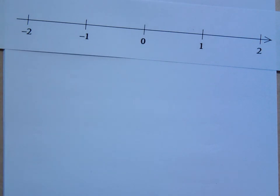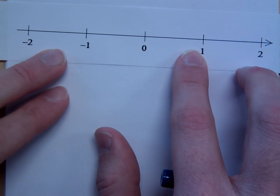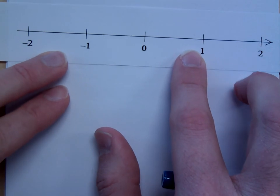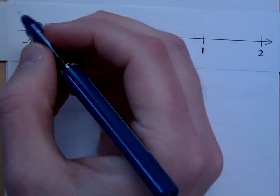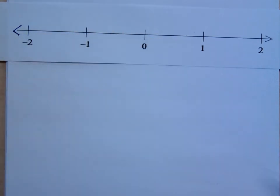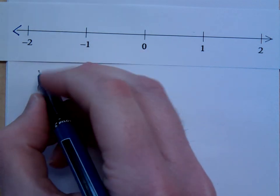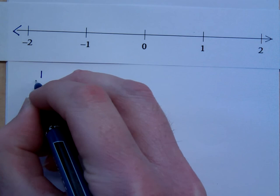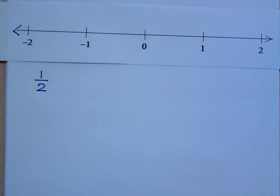I want us to get an idea about where numbers are on the number line. I apologize for the low-techiness of this, but here's a good number line for you. Let's make sure it does have an arrow on both ends. So, if I were to talk about where is the number one-half — where does one-half show up?